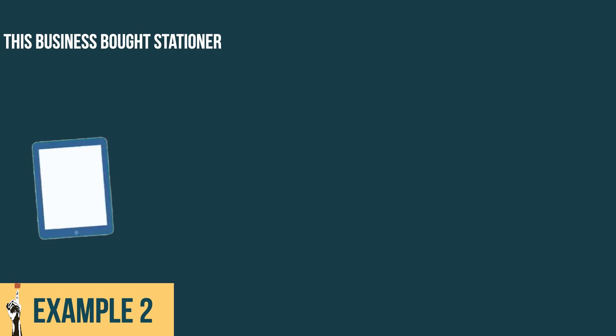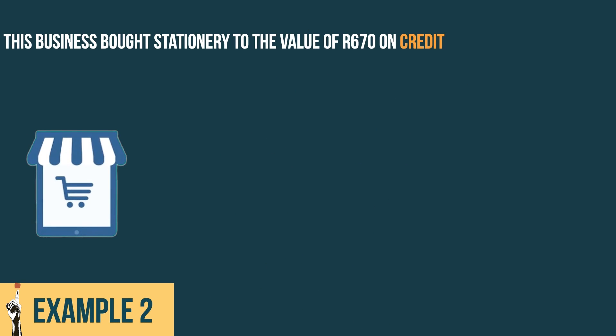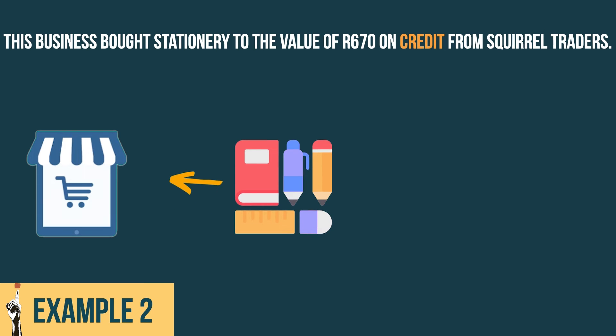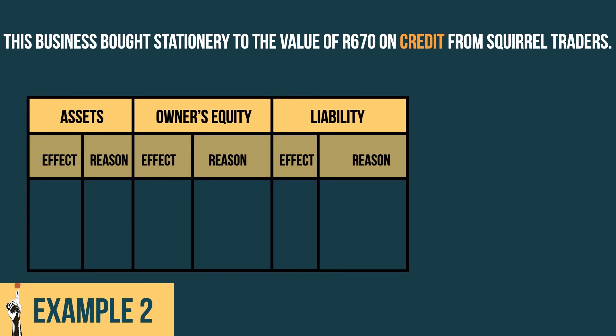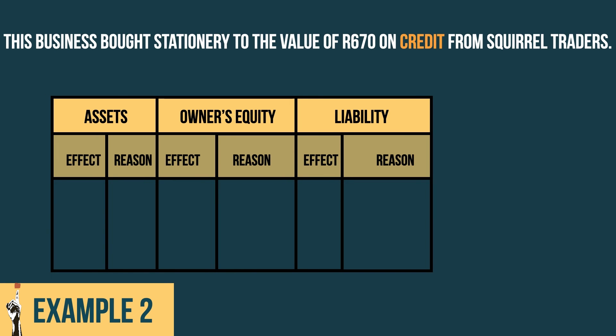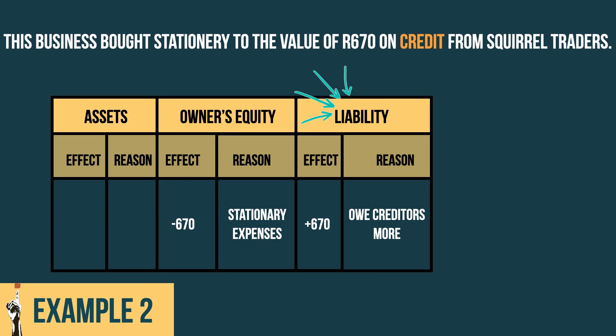Let's look at a different example. This business bought stationery to the value of 670 rand on credit from Squirrel Traders. The stationery is an expense for the business. Therefore, when stationery is purchased, owner's equity decreases. The business does not, however, pay cash for the stationery because it is bought on credit from a creditor. The debt to creditors is a liability which increases by the purchase amount.